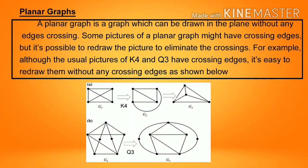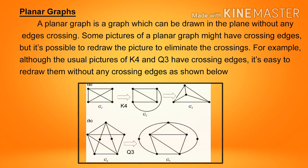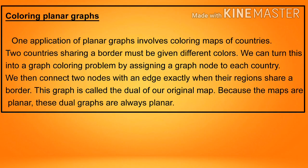Planar graph: a planar graph is a graph which can be drawn in the plane without any edge crossing. Some pictures of a planar graph might have crossing edges, but it is possible to redraw the picture to eliminate the crossings. For example, although the usual pictures of K4 and Q3 have crossing edges, it is easy to redraw them without any crossing edges. Coloring planar graphs: this creates the dual of the original map. Because the maps are planar, these dual graphs are always planar.